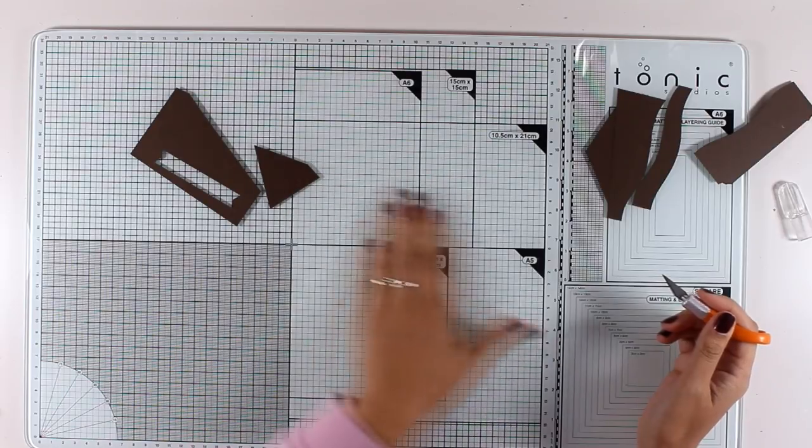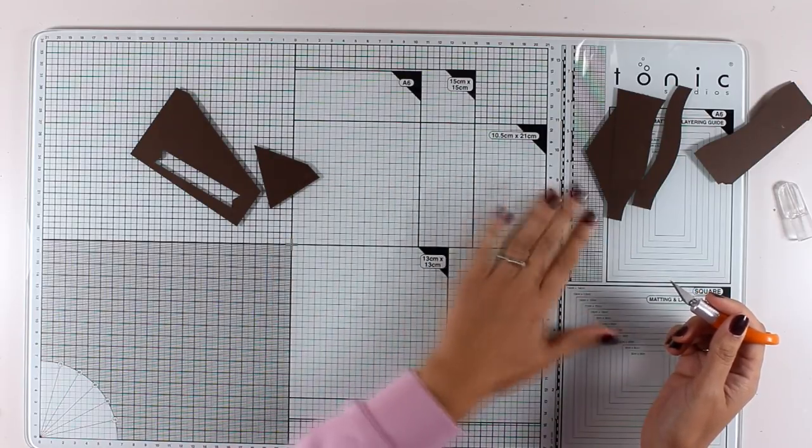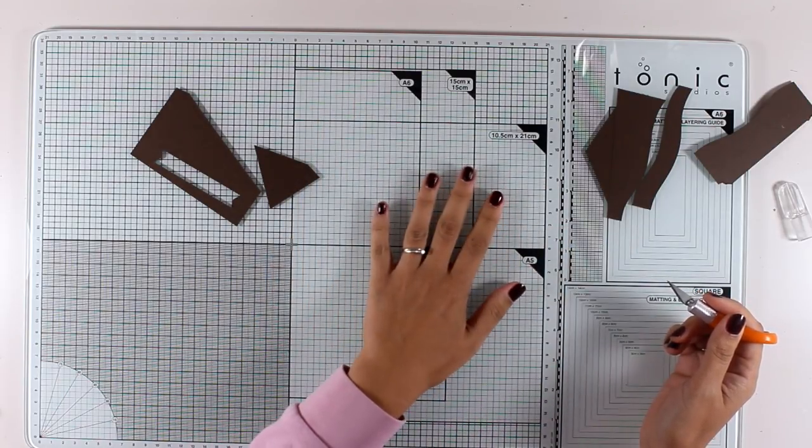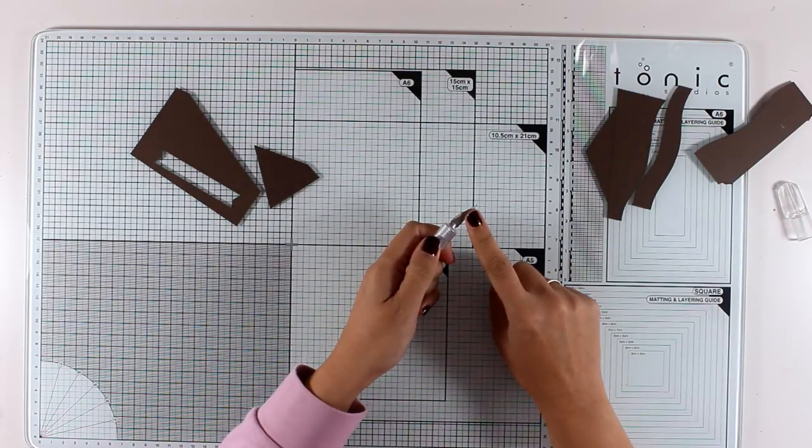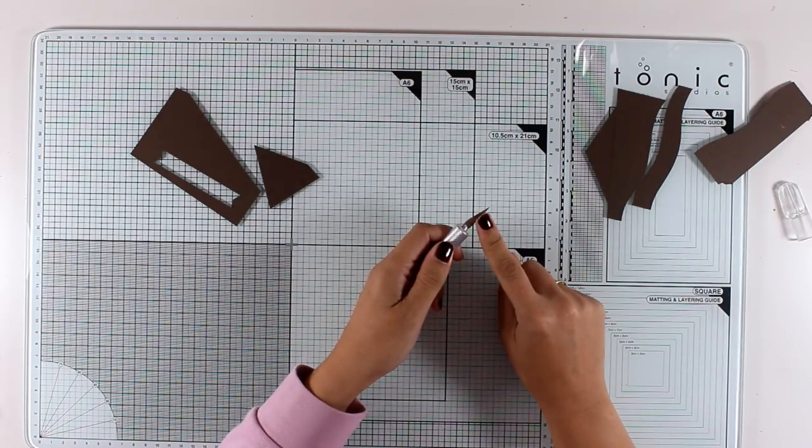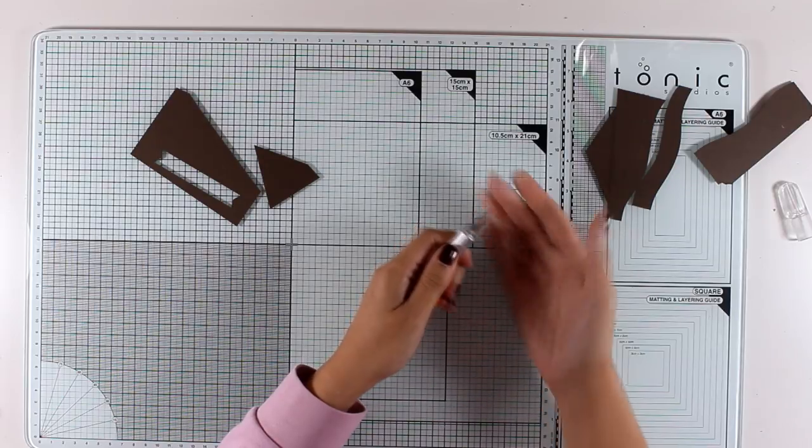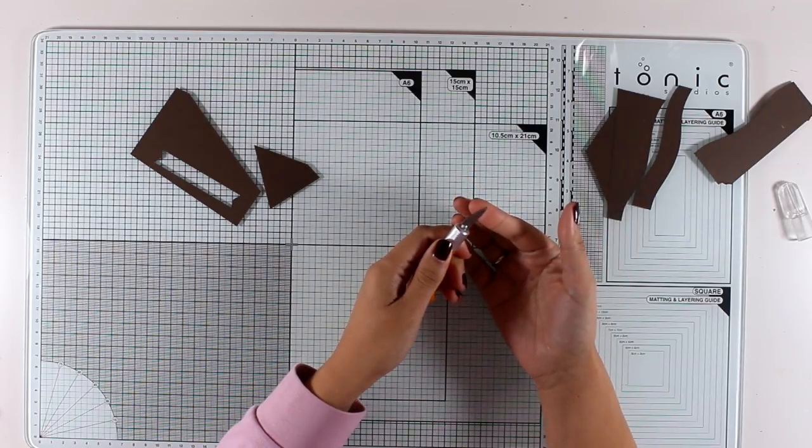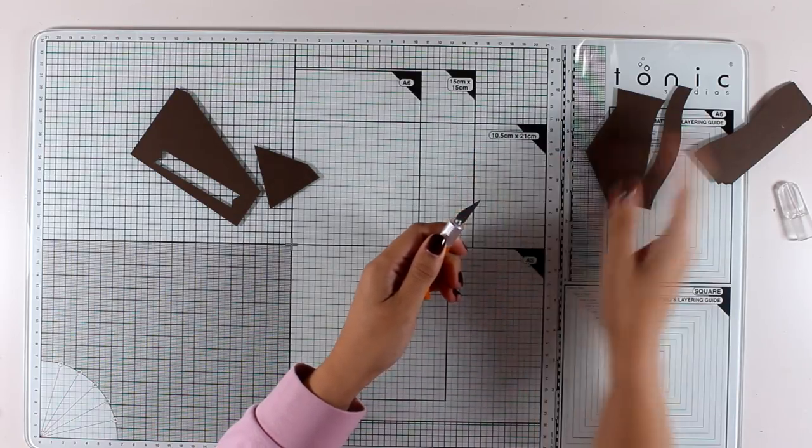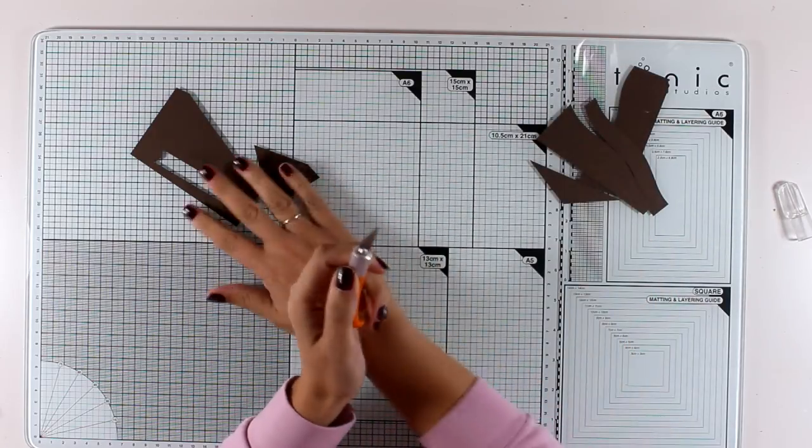Remember this is tempered glass, it's like the glass that we have on the screens of our mobile phones. But you need to remember that the blade of your craft knife might dull sooner than if you were using it on top of a self-healing mat.